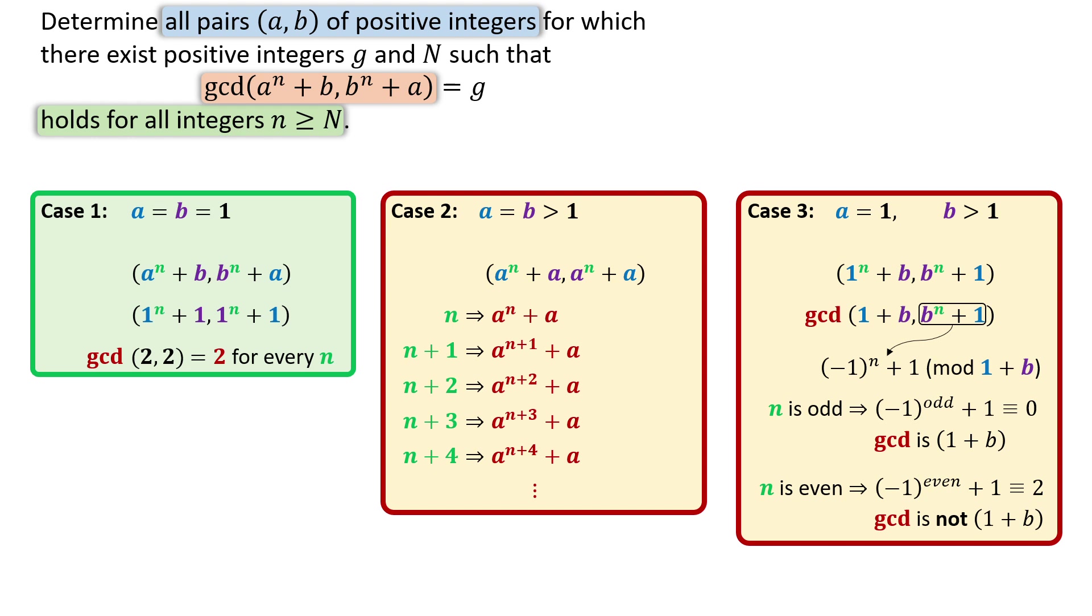We have to find all possible pairs of a and b. Now let's consider the GCD for two expressions using Euler's theorem. Euler's theorem states that if a and q are co-prime, then a to the phi q is 1 mod q. Phi q is Euler's totient function, which counts the integers from 1 to q that are co-prime with q.